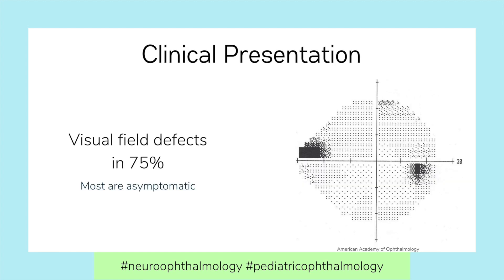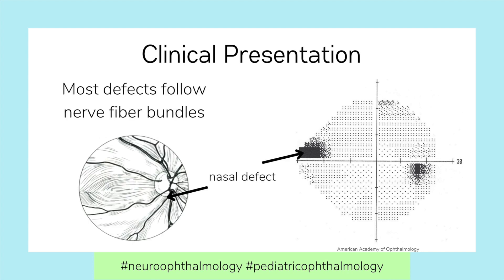Most cases of Optic Disc Drusen are asymptomatic. While visual field defects are common, present in approximately 75% of cases, most patients are not aware of them. Remember that 75% of cases are bilateral and 75% have visual field defects. The visual field defects typically follow nerve fiber bundles, resulting in glaucoma-like visual field defects.